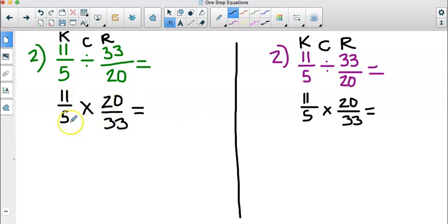On the left side we're going to multiply first and then reduce. On the right side we're going to reduce diagonally and then multiply, so we can compare and see which seems faster and simpler.